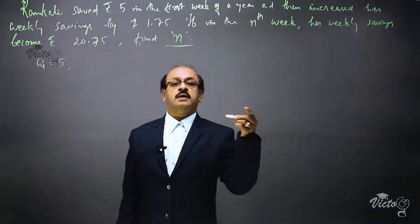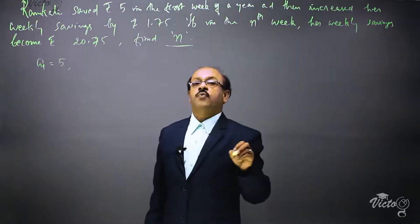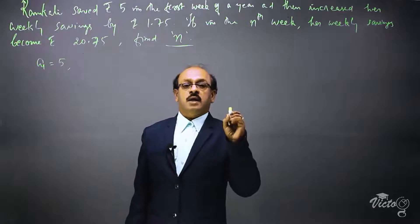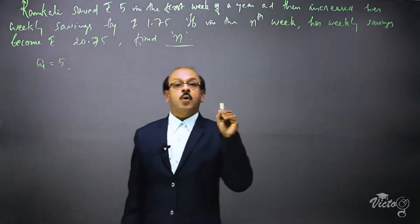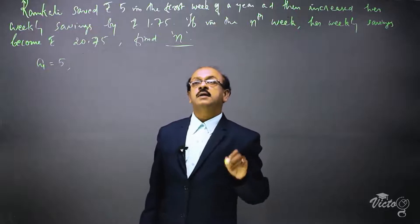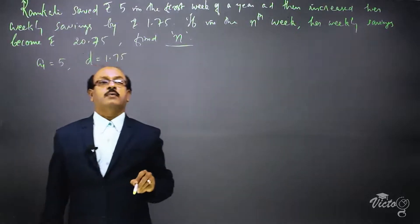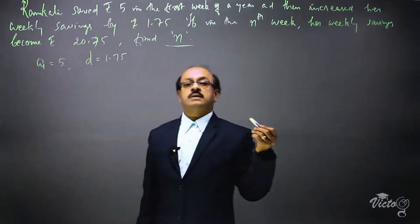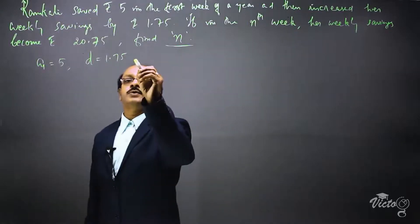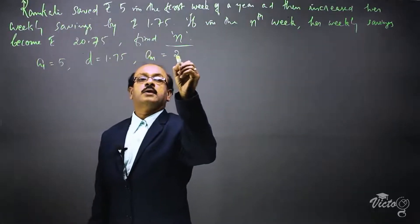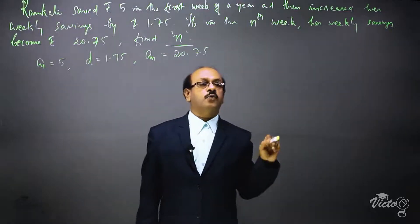She increased her savings each week by rupees 1.75, which means common difference d = 1.75. And the final savings that means our last term an = 20.75.